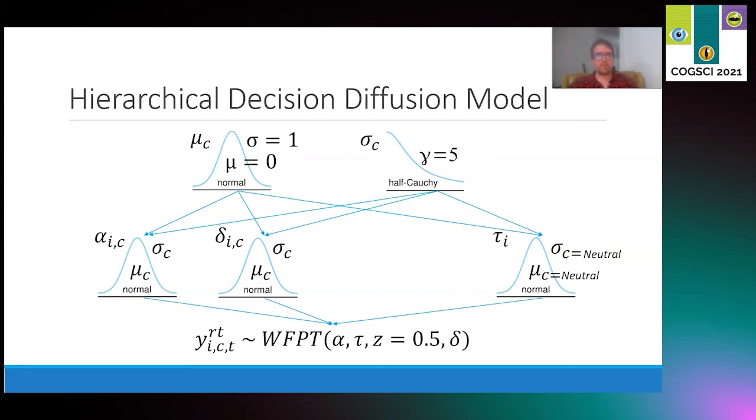This is a hierarchical model, so each individual level parameter is informed by group level hyperparameters. You can see here the means and standard deviations of those hyperparameters, the hyperpriors that we use for those. This is a good approach for dealing with analyses that have smaller sample sizes. Together, the individual parameters inform a Wiener first passage time distribution, which gives the log probability density of response time at each trial given the free parameters. Last, we set the initial bias to a flat 0.5, assuming no bias for these analyses.